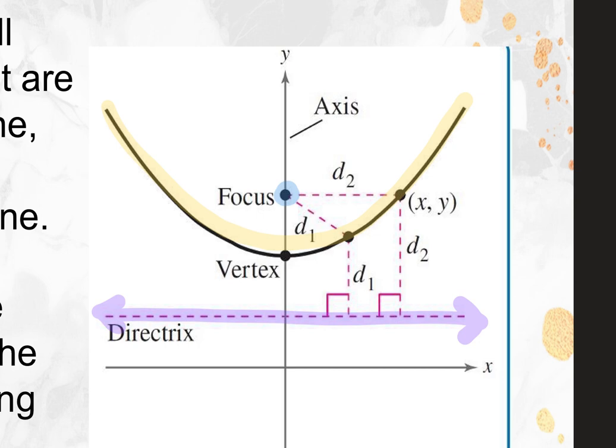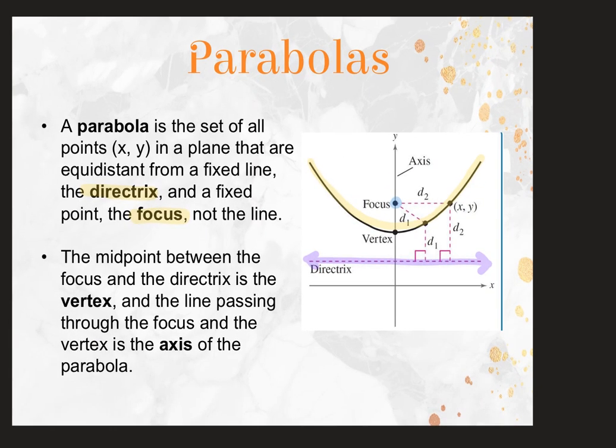Those three parts are what you're going to identify. If given information and drawing, you'll be given two of the three: focus and directrix, focus and vertex, or vertex and directrix. The midpoint between the focus and the directrix is the vertex, and the line passing through the focus and the vertex is the axis of symmetry, which is perpendicular to the directrix.